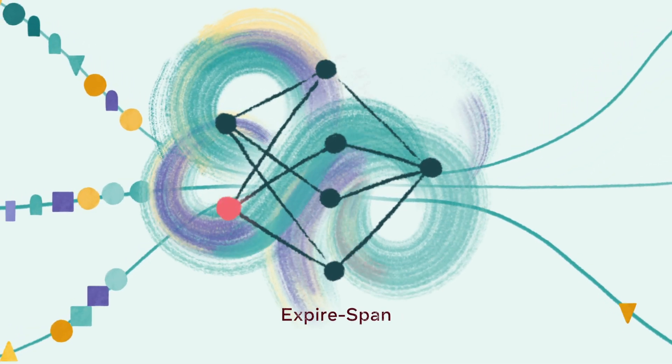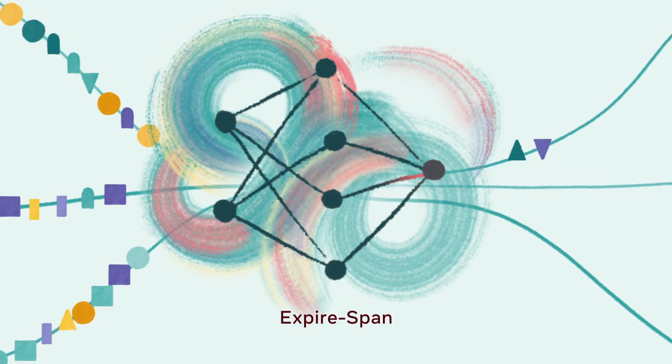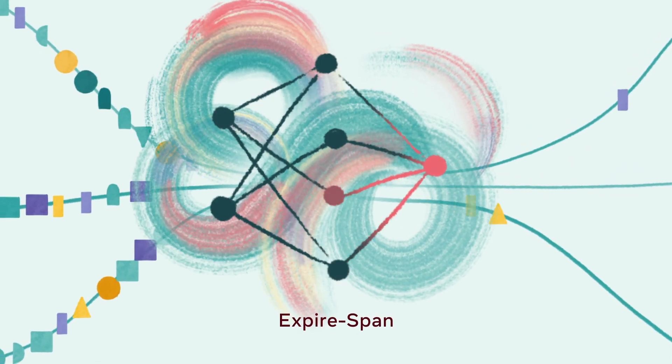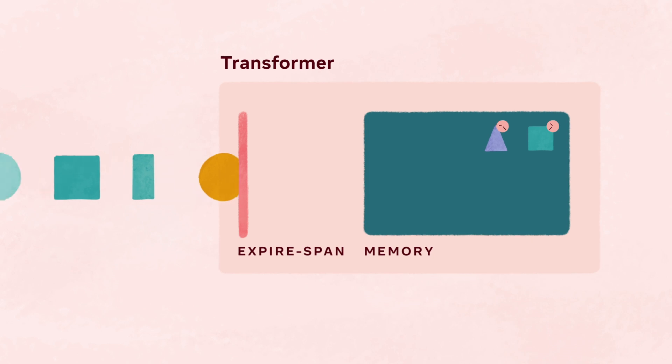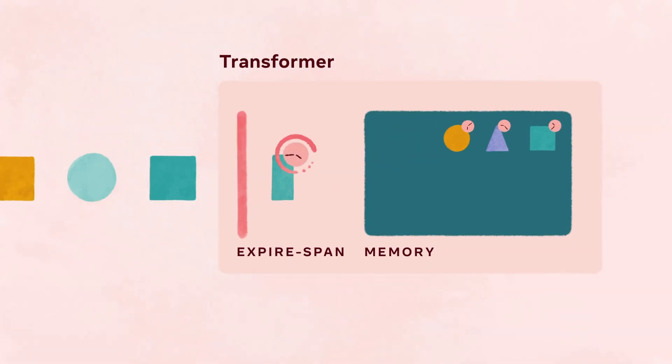Facebook AI is introducing a new method called Expirespan that equips neural networks with better ability to forget. We added an Expirespan module to the popular Transformer Neural Network architecture to predict the expiration of a piece of information.